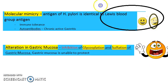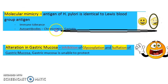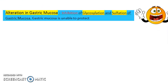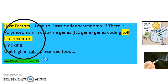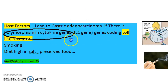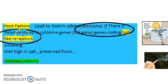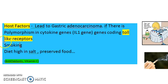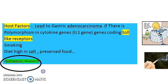Third, molecular mimicry — H. pylori antigen is identical to Lewis blood group antigen, causing immune tolerance and autoantibodies leading to chronic active gastritis. Fourth, alteration of gastric mucosa — impaired glycosylation and sulfation means the mucosa cannot protect the stomach. Fifth, host factors — polymorphisms in cytokine genes or toll-like receptor genes can lead to gastric adenocarcinoma; smoking and high-salt/preserved food diets worsen pathogenesis, while fresh foods rich in antioxidants and vitamin C offer protection.